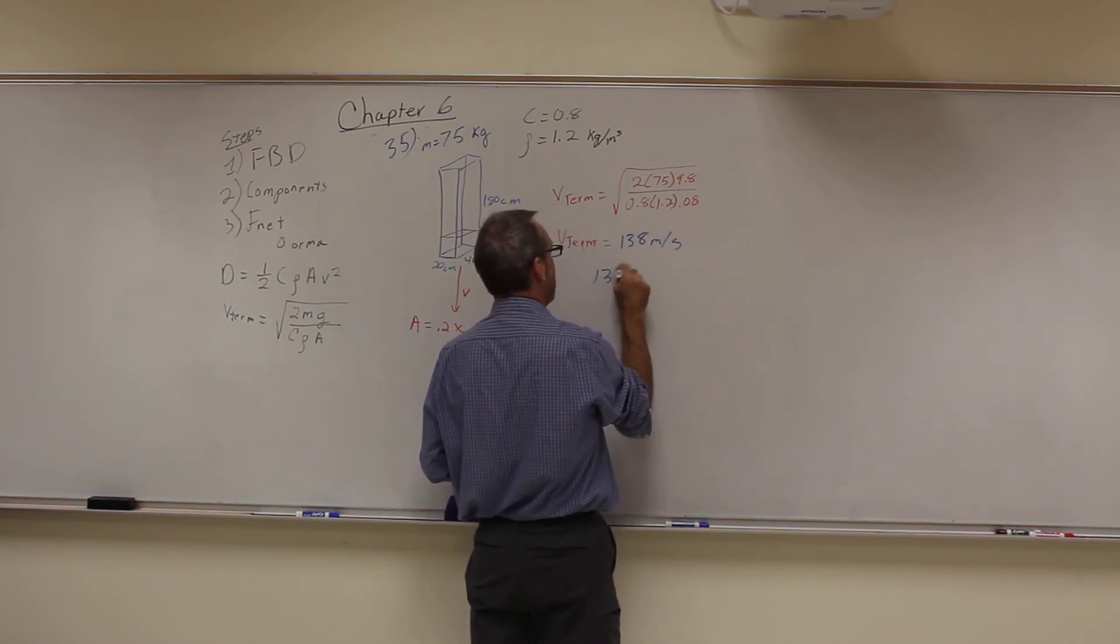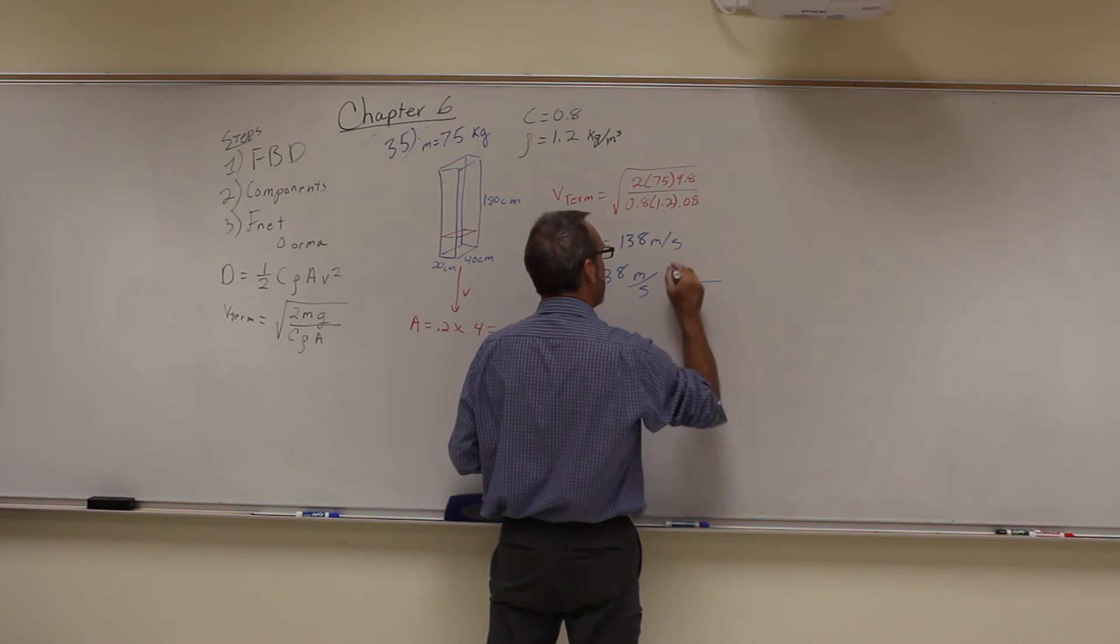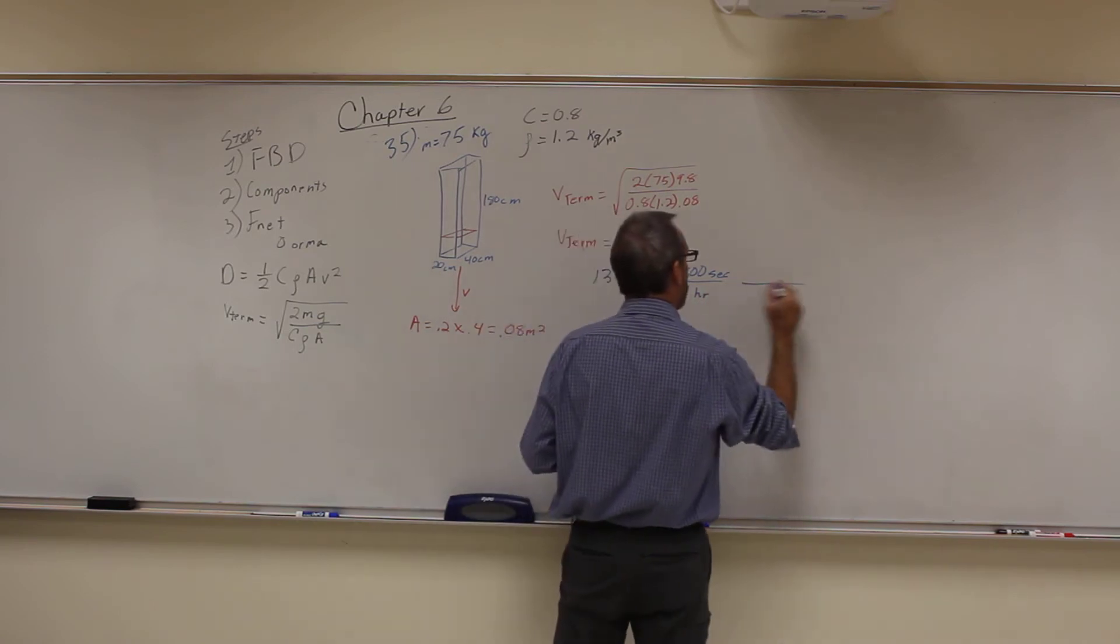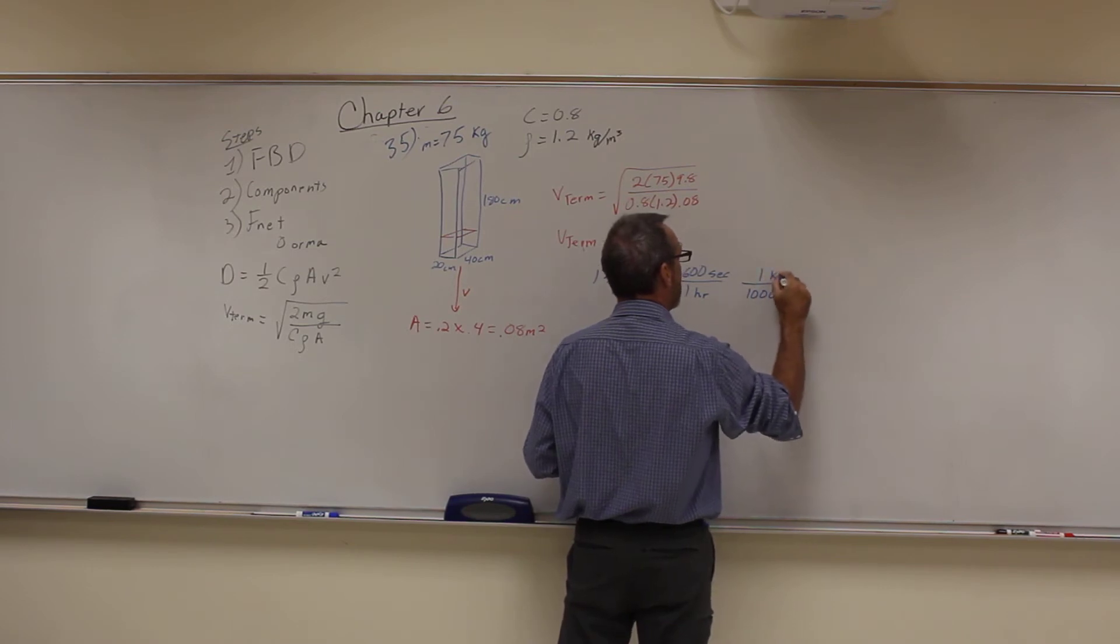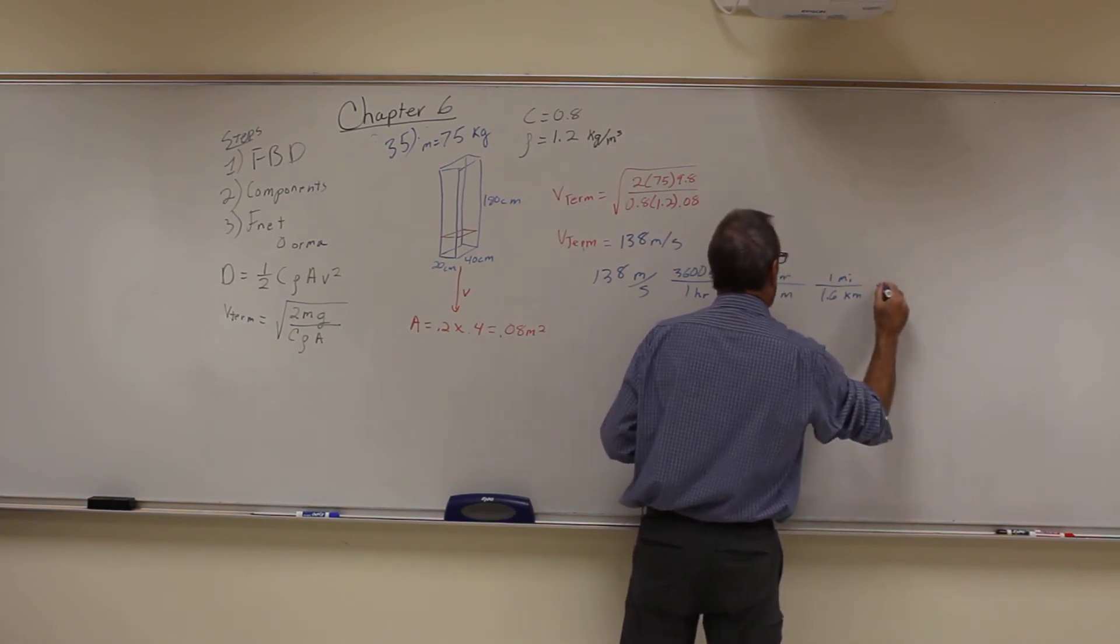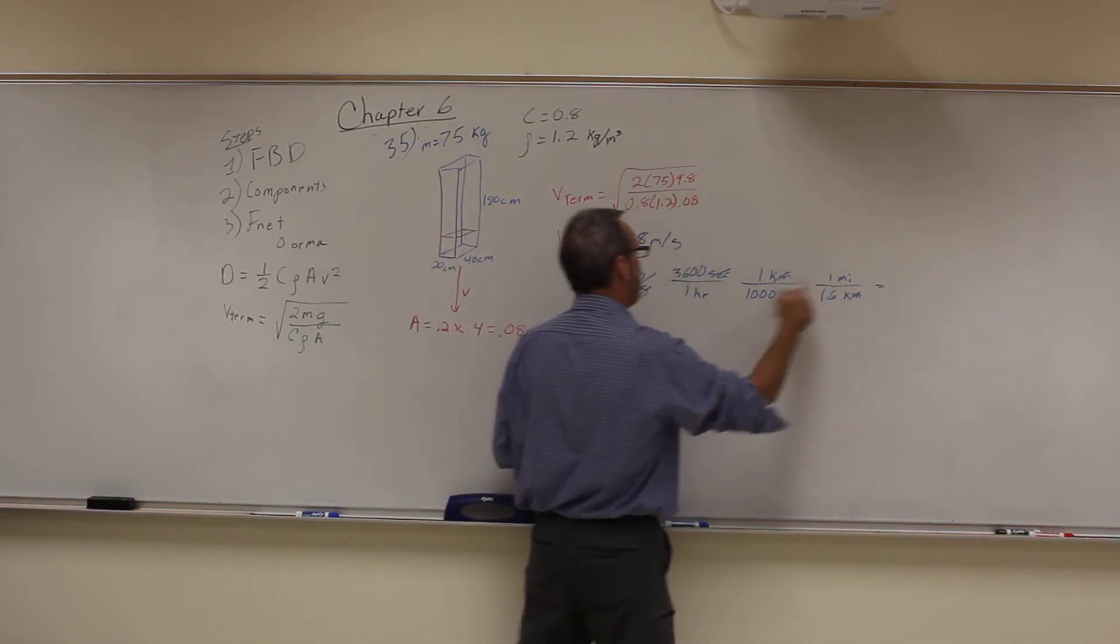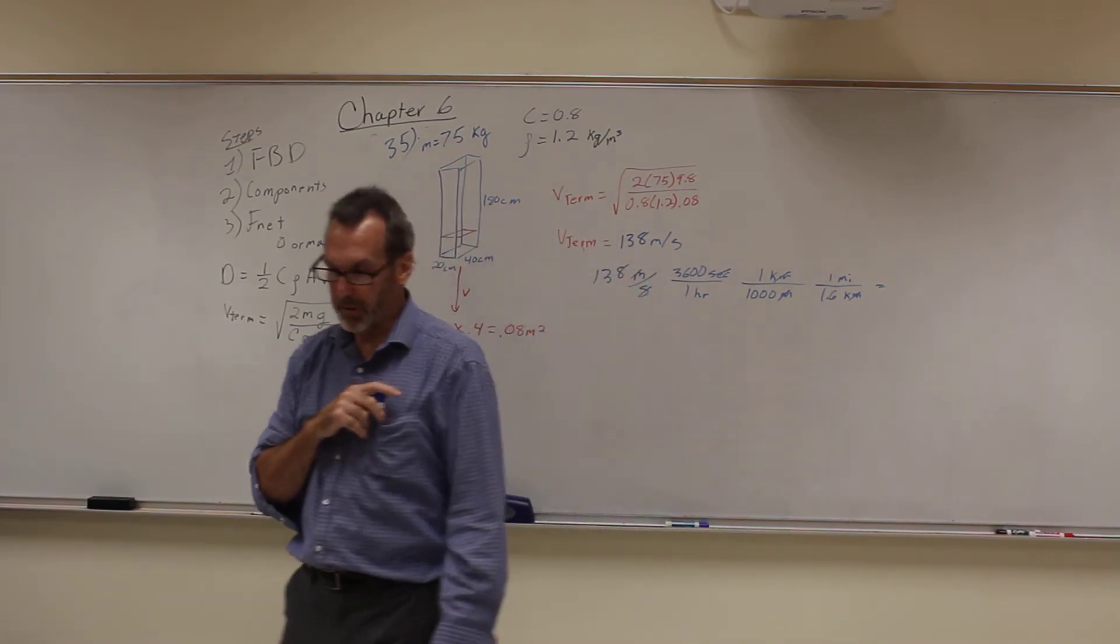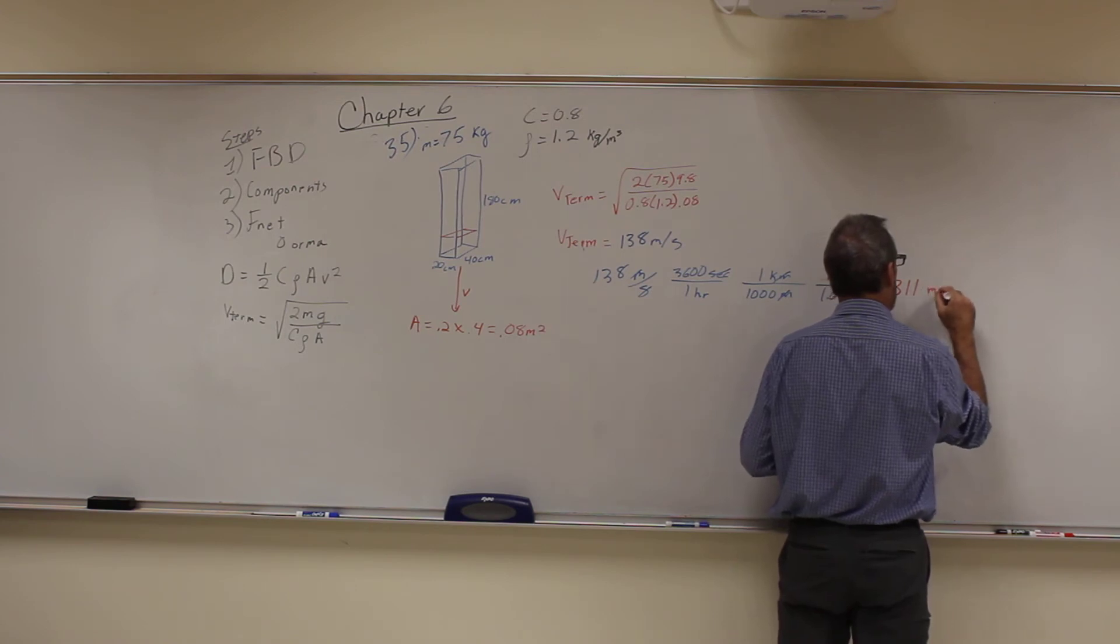Let's put that in perspective. So 138 meters per second—I want to convert that to miles per hour. I have 3600 seconds in one hour, and then I have 1000 meters in one kilometer, and then to get to miles it's 1.6 kilometers per mile. When I do that I get that the speed is 311 miles per hour.